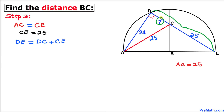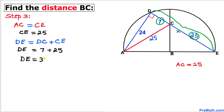We can see that the whole line segment DE is the sum of the individual segments CD and CE. CD is 7 and CE is 25, so DE = 7 + 25 = 32 units.